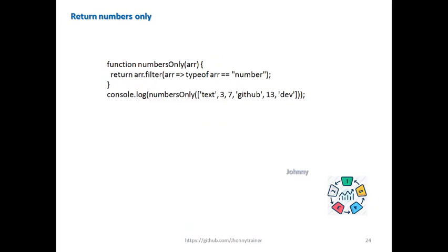So we discussed returning only the numbers from an array. We learned about `typeof` first, then `filter`. Based on those two concepts we solved this. We used the strict equality operator `===`, which checks both value and data type — so `typeof element === 'number'` filters out non-number elements and keeps only numbers in the new array.